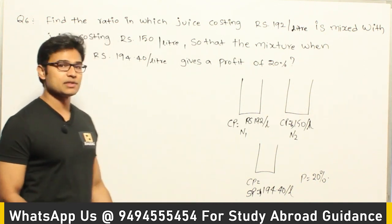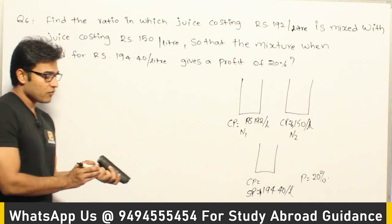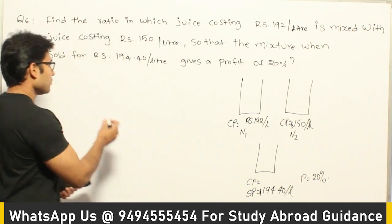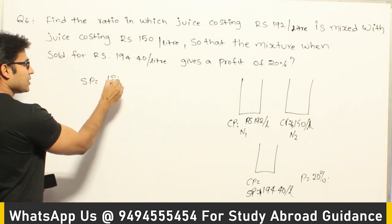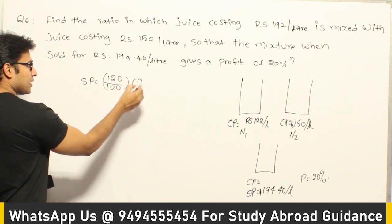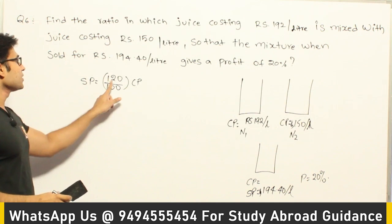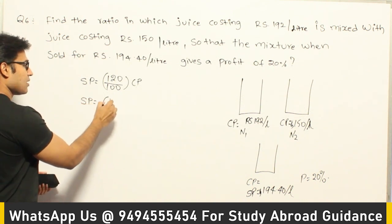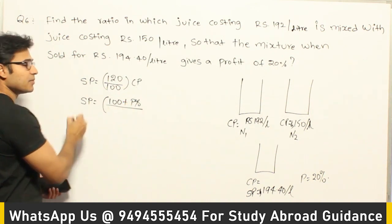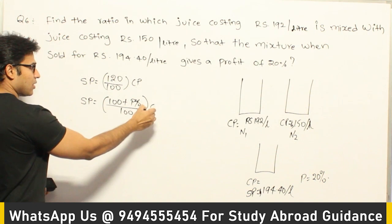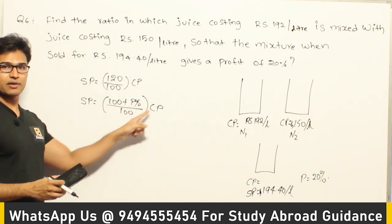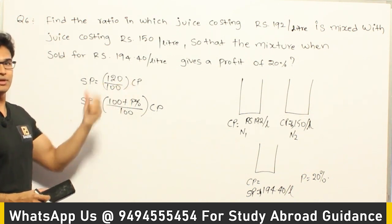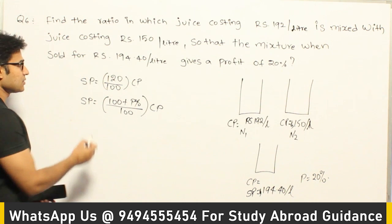What is the relationship between selling price and cost price? We make a profit of 20% when we sell a product at 20% higher than its cost price — that is, at 120% of the cost price. The formula for selling price is: SP = ((100 + profit%) / 100) × CP when making a profit, or SP = ((100 − loss%) / 100) × CP when making a loss. So cost price equals (100 / 120) × selling price.